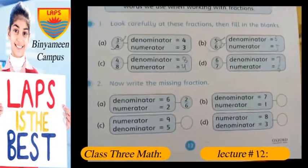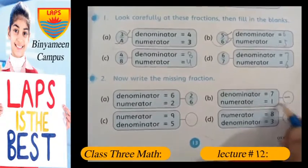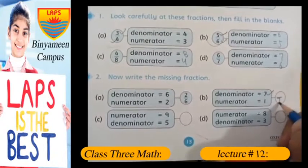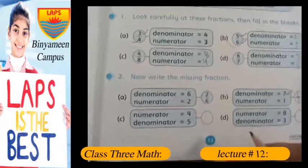Now if we look at that, we have 7 as a denominator, so 7 will be written below, and the numerator is 1, so it will be written above 7.